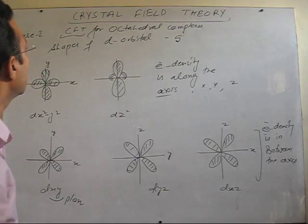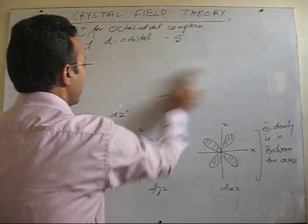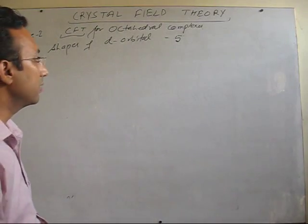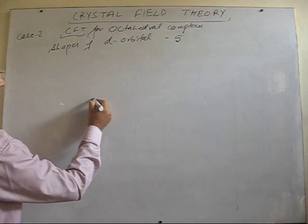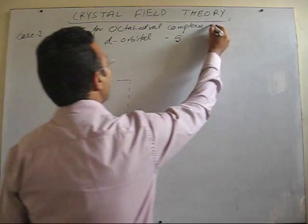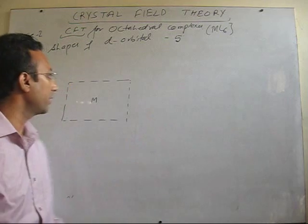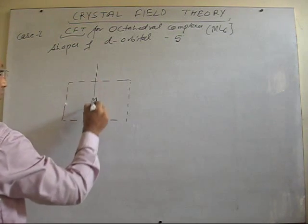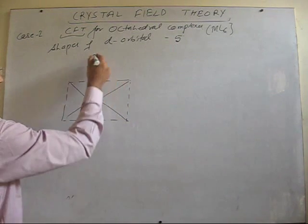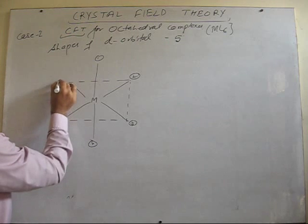To understand the splitting in the octahedral field, we also need to understand the octahedral geometry. In an octahedral complex ML6, six ligands approach the metal from the six corners of an octahedron. These are the six corners of the octahedron — corners one through six. We can assign x, y, and z axes such that each pair of opposite corners lies along one axis.